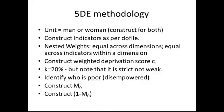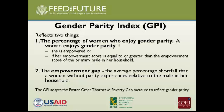When we do the methodology, although for the 5DE we report women's empowerment, when we construct the Gender Parity Index we construct it for both women and men. So when we run the data, we actually construct it for women and men together. The 5DE reports only women's empowerment — the percentage of women who are empowered and the average sufficiency they enjoy. This is just a reminder of those steps.